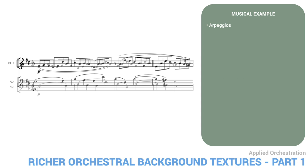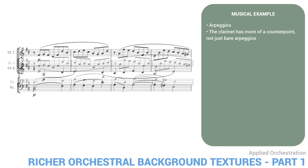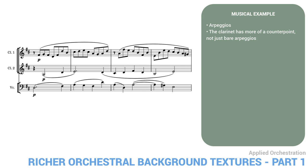This is pretty boring, very formulaic. Again, the main problem is that it's totally predictable. Now let's improve it a bit. This is better. Now the clarinet has more of a counterpoint, not just bare arpeggios. The arpeggio motive is still there, but it's enriched by some non-harmonic tones. But even this could be better still. The previous version was a bit dry. Adding the second clarinet with longer note values below the first one smooths out the texture and makes it richer overall. And that's the goal.